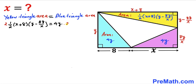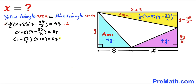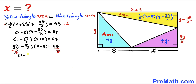Let's remove the fraction by multiplying both sides by 2, so we get (x + 8)(y − 8y/x) = 8y. Rearranging terms, we can see y is in common, so I can factor out y and I am left with y(1 − 8/x)(x + 8) = 8y. Dividing both sides by y, we end up with (1 − 8/x)(x + 8) = 8.